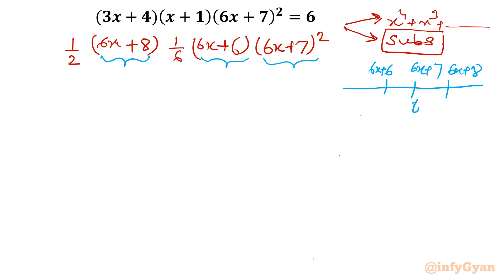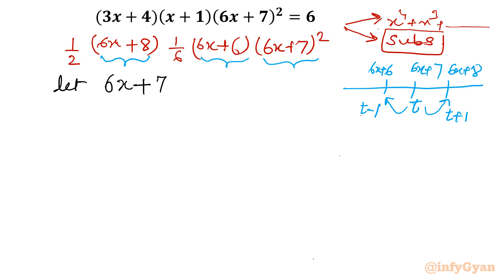If I substitute the middle term as t, then 6x + 6 would be t − 1 and 6x + 8 would be t + 1. So the substitution logic is to pick the middle bracket. Let 6x + 7 = y, which means x = (y − 7) / 6.